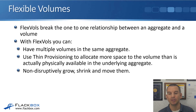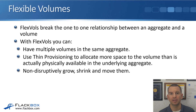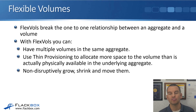FlexVols break that one-to-one relationship between an aggregate and a volume. You can now have multiple volumes in the same aggregate. Because of the way they work, you can use thin provisioning to allocate more space to the volume than is actually physically available in the underlying aggregate. For example, if you have a 20 terabyte aggregate, you can make it look to clients like there is 50 terabytes of available space, allowing you to buy physical disks just when you actually need them. Another thing you can do with FlexVols is non-disruptively grow, shrink, and move them — things you could not do with traditional volumes.